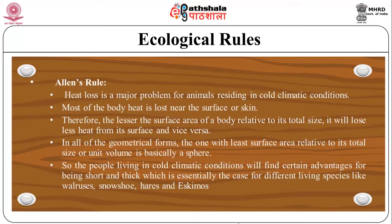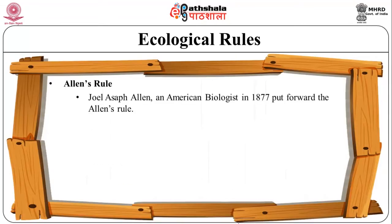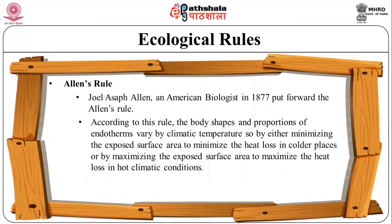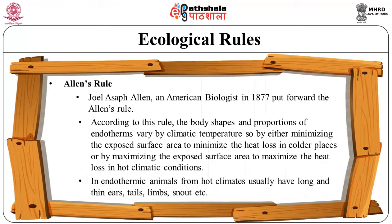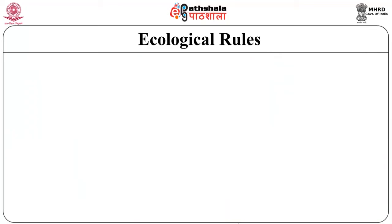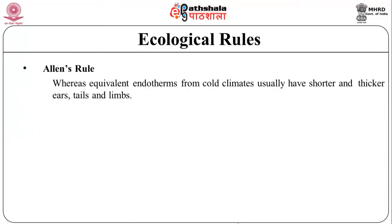People living in colder climatic conditions find certain advantages in being short and thick, which is essentially the case for different living species like walruses, snowshoe hares, and Eskimos. Joel Asif Allen, an American biologist, put forward Allen's Rule in 1877. According to this rule, the body shapes and proportions of endotherms vary by climatic temperature — either minimizing exposed surface area to minimize heat loss in colder places, or maximizing exposed surface area to maximize heat loss in hot climatic conditions. Endothermic animals from hot climates usually have long and thin ears, tails, limbs, and snout.